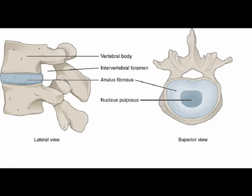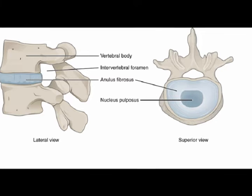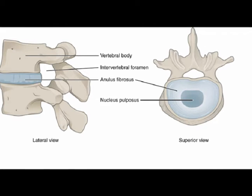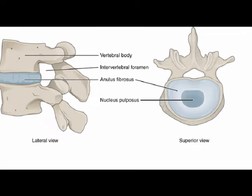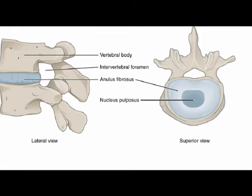The nucleus pulposus, often abbreviated to NP, is comprised mostly of water and contains cartilage cells and collagen fibers. It is gel-like and has the consistency of toothpaste. It contains proteoglycans, which attract water, which in turn supports the disc's structural integrity. The nucleus pulposus is avascular, and its primary function is to sustain and transmit pressure that is exerted throughout the vertebral column.